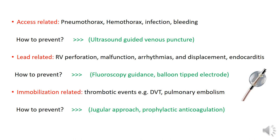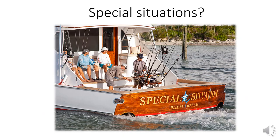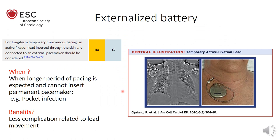In special situations — such as a patient with a permanent pacemaker presenting with pocket infection requiring extraction who is pacemaker-dependent — we need temporary pacing while the infection clears. An alternative to the regular temporary pacemaker is an externalized battery setup: a screw-in lead is fixed in the right ventricle for greater stability, then connected to an external pacemaker battery. This results in fewer complications than a standard temporary pacemaker, particularly regarding lead migration and perforation. The site is usually contralateral to the original permanent pacemaker site.